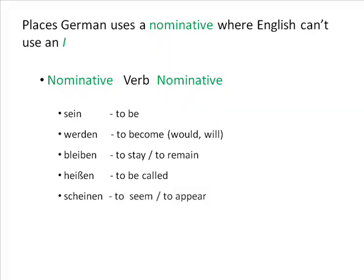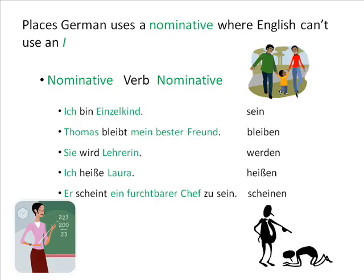Examples of these are: 'Ich bin Einzelkind' — I'm an only child. 'Thomas bleibt mein bester Freund' — Thomas remains my best friend. 'Sie wird Lehrerin' — she's going to be a teacher. 'Ich heiße Laura' — I'm called Laura. 'Er scheint ein furchtbarer Chef zu sein' — he seems a terrible boss.